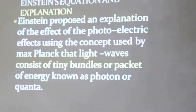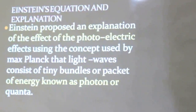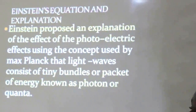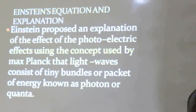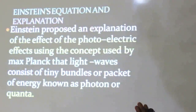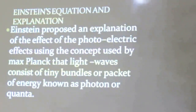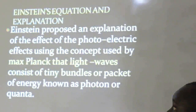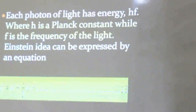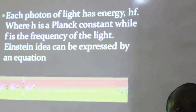Albert Einstein also worked on the photoelectric effect, giving us the sub-topic: Einstein's equations and explanation. Albert Einstein proposed an explanation of the photoelectric effect using a concept used by Max Planck. Max Planck's theory of radiation established that the photon of light rays emitted is given by E = HF, where H stands for the Planck constant and F stands for the frequency of the light ray.